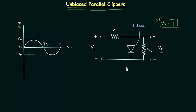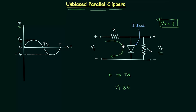In series clippers the diode is connected in series with the load resistance, whereas in parallel clippers the diode is connected in parallel with the load resistance. Now I will calculate the output voltage for the first half cycle from 0 to T/2. The input voltage is positive during this half cycle, so Vi is greater than or equal to 0. The polarity of Vi is plus-minus and the direction of current will be clockwise, matching the direction of the arrow in the diode symbol.